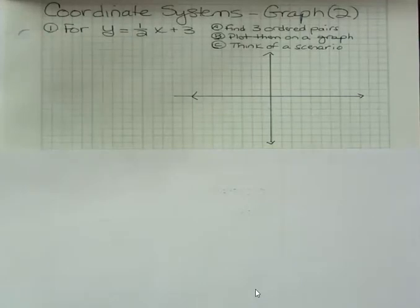In the last one, I gave you one half of the ordered pair and you had to find the other half. Now it's harder because I'm not giving you anything. I'm asking you to find three ordered pairs on your own, then plot them on a graph, and then think of a scenario that could fit this particular equation.